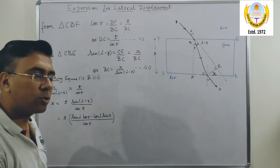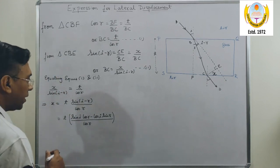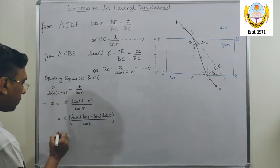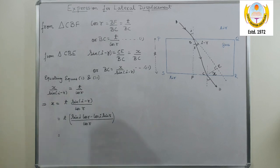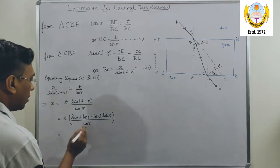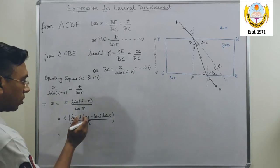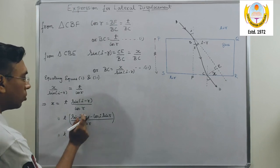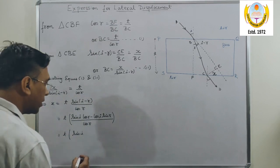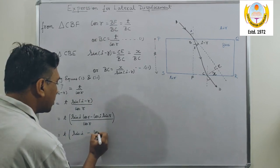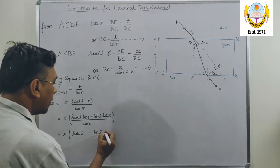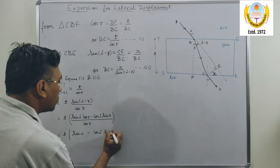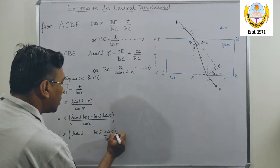So X equals to T, which I can write as cos R divided by cos R.